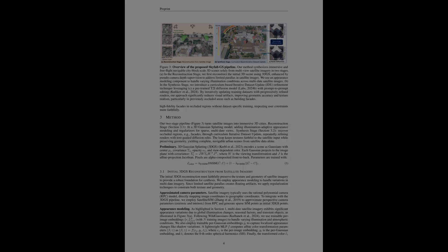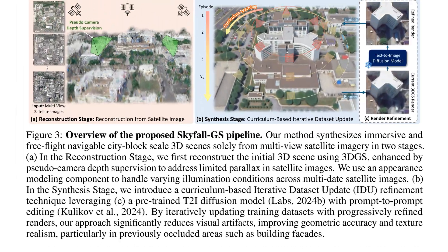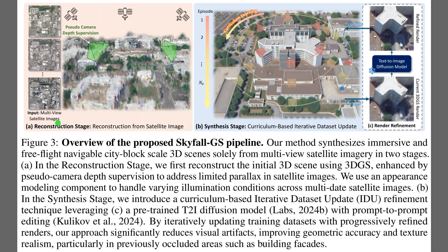Figure 3 shows how the system turns satellite photos into an explorable 3D city through a reconstruction stage and a synthesis stage. The left panel reconstructs a coarse 3D Gaussian splatting scene, which stays consistent because pseudo-camera depth supervision counters the tiny viewpoint changes in satellites. The center panel depicts a curriculum of episodes that lowers camera height to reveal hidden facades. The right inset illustrates render refinement via text-to-image diffusion editing, where a generative model repaints views under text guidance while preserving layout.